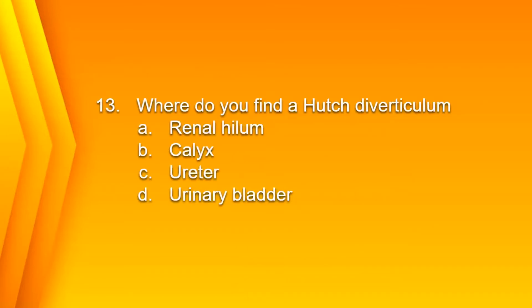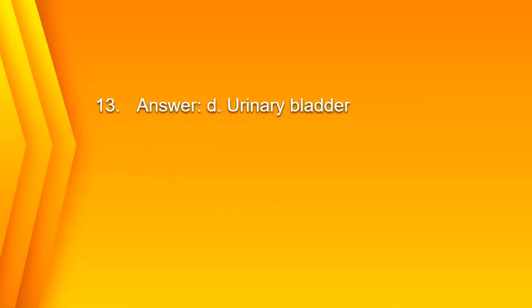Number 13: Where do you find a Hutch diverticulum? A. Renal hilum, B. Calyx, C. Ureter, or D. Urinary bladder? The answer is D. Urinary bladder.